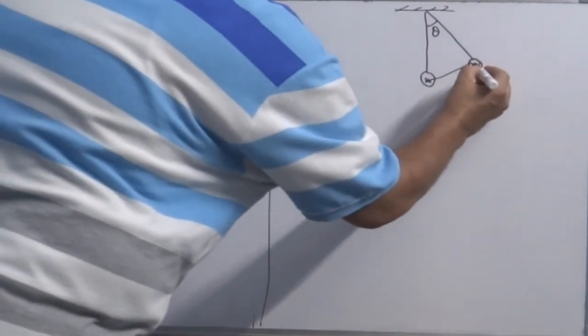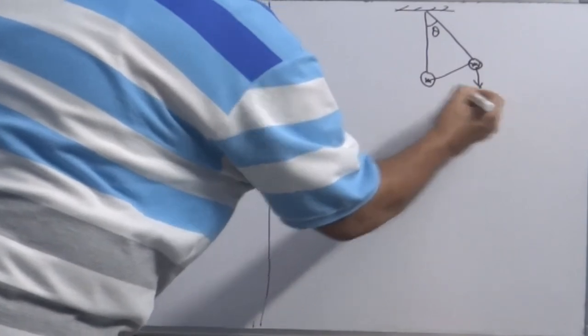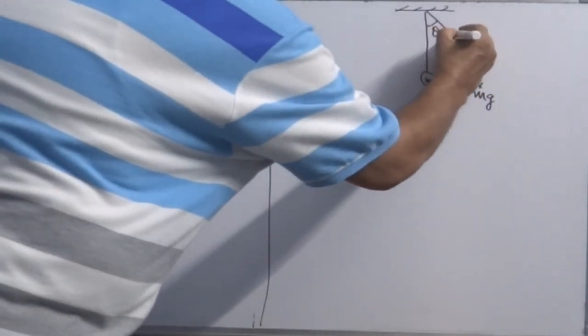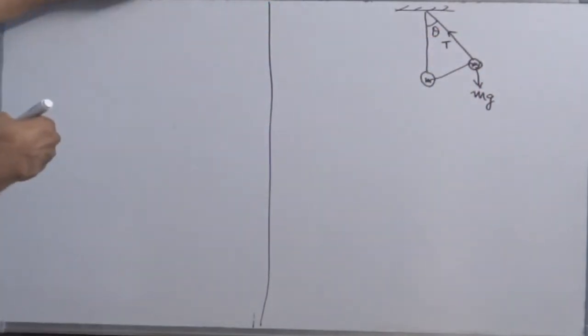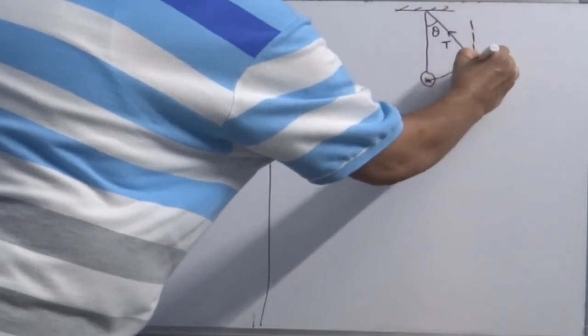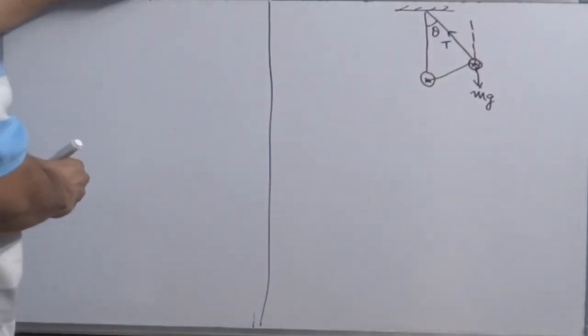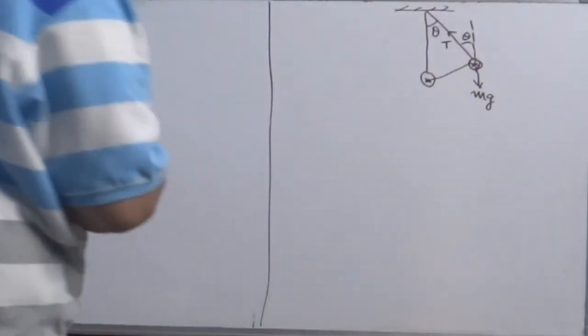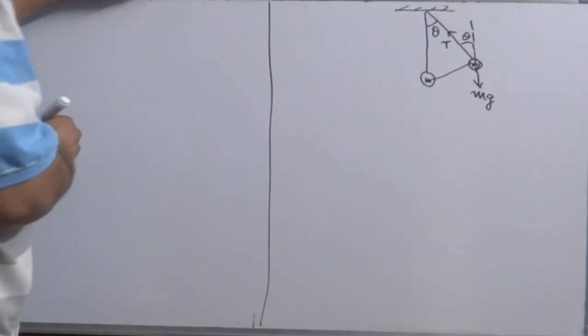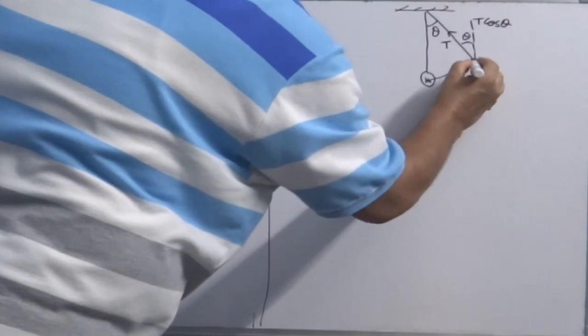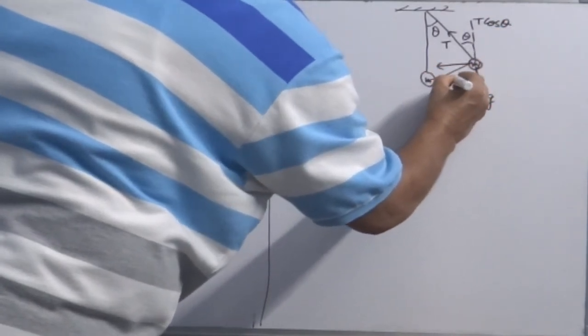So resolve possible forces. Weight of the bob, weight force will act downward. String gets tense, so you can say tension T, tension is also a force. Drop a perpendicular line around Y axis, this angle will be equal to this angle, so theta. Resolve T now, that is T cos theta and T sine theta will act this side.